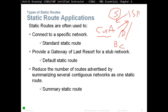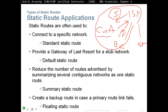A summary static route reduces the number of routes in the routing table. Instead of creating a separate static route for each customer network, you can summarize them into one route. A floating static route acts as a backup: you have a preferred path A and a backup path B. If path A fails, the floating static route takes over as a backup route.